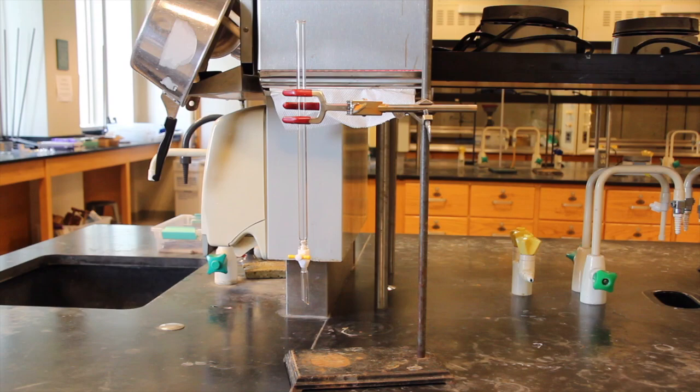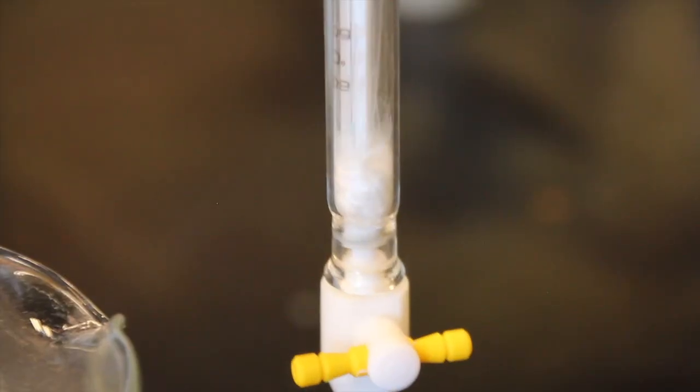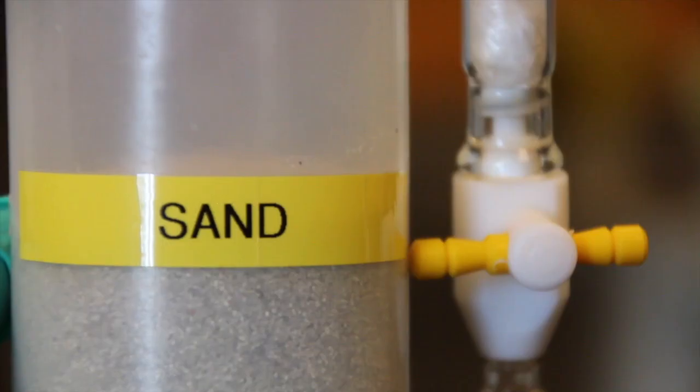Next, obtain a column one centimeter in diameter and 15 to 20 centimeters long from the side counter. You are going to place a small piece of glass wool at the bottom of the column and a small plug of sand.